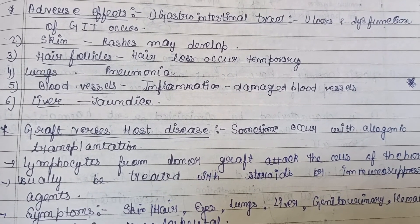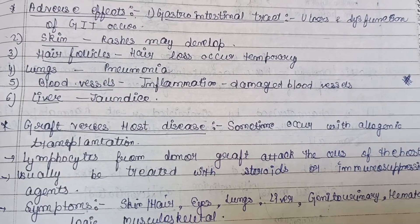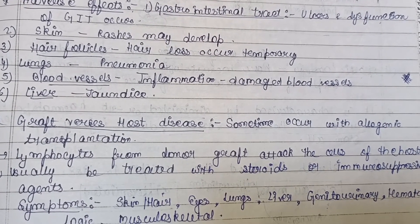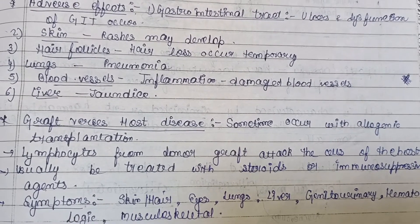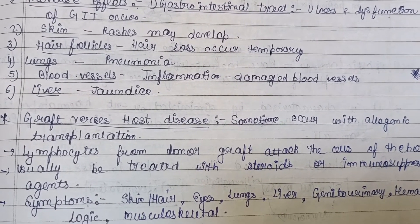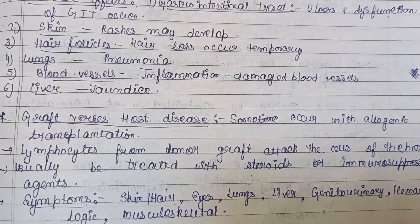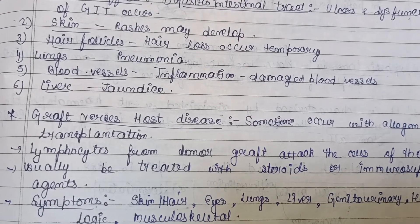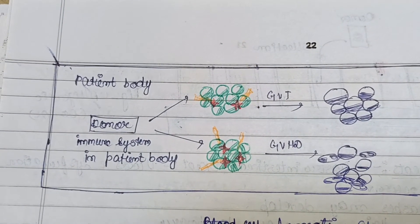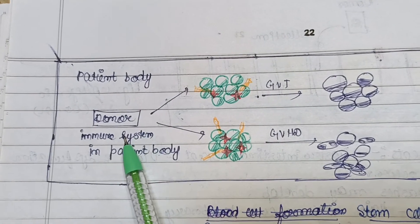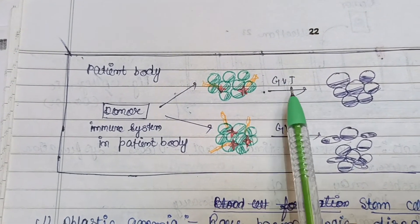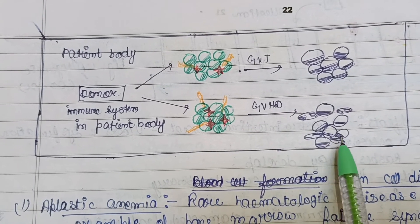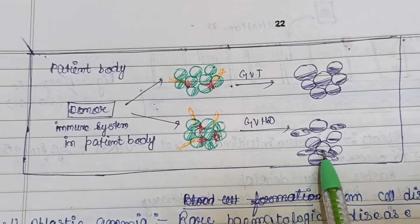GVHD sometimes occurs with allogeneic transplantation, where marrow is obtained from a donor. Lymphocytes from the donor graft attack the cells of the host — the patient. It is usually treated with steroids or immunosuppressive agents. Symptoms of GVHD can be seen on the skin, hair, eyes, lungs, liver, genitourinary or urinary tract, and in hematologic and musculoskeletal parts. A diagram shows the normal condition versus the GVHD condition, where the shape of transplanted cells has changed.